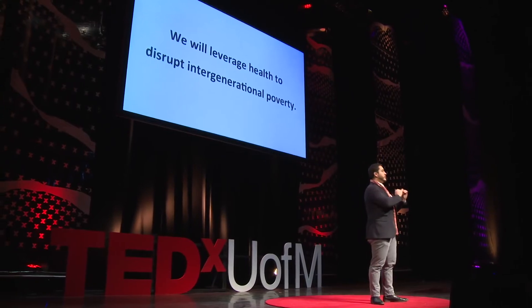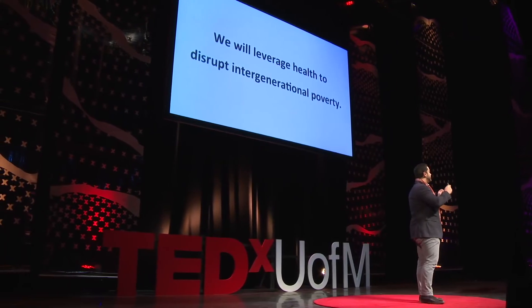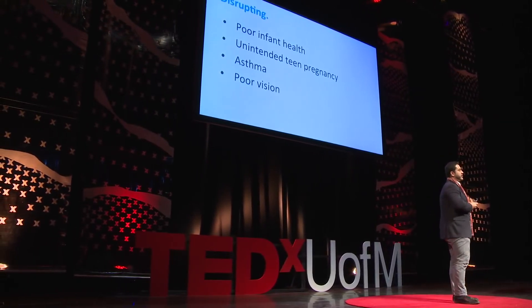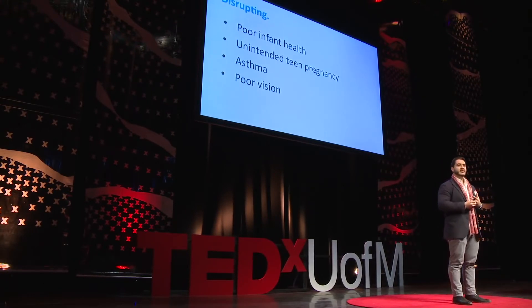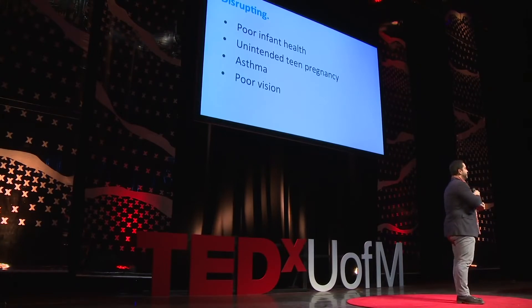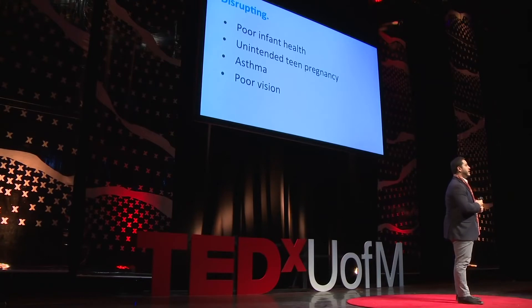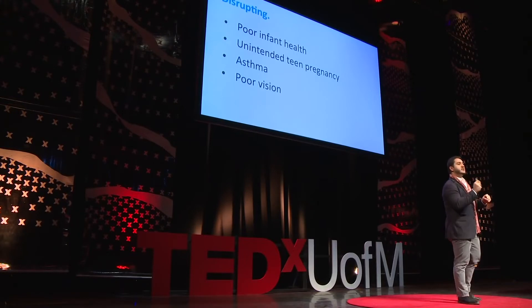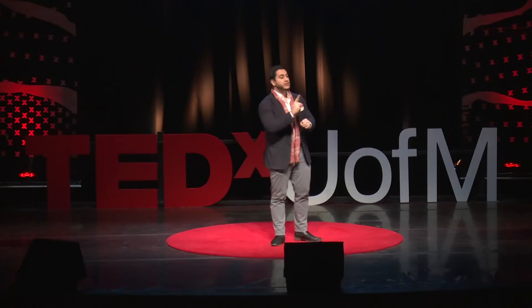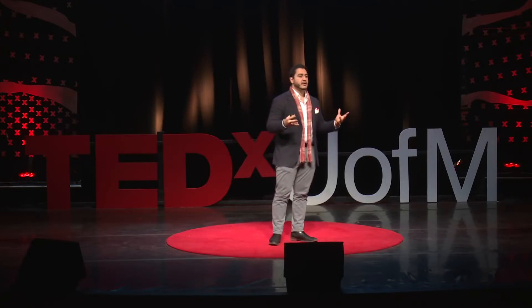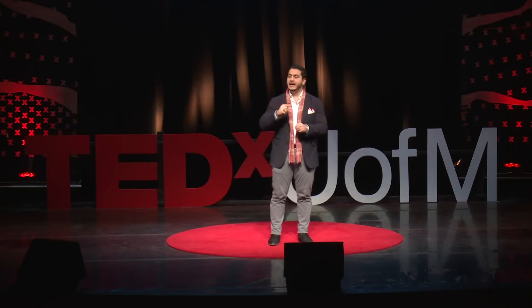At the Detroit Health Department, we leverage health to disrupt intergenerational poverty. Our goal is to think about barriers children face to being able to learn and earn like any child anywhere in America, and to systematically dismantle them. We're working on four outcomes: poor infant health — a preterm baby is likely to earn about $3,000 less at age 30; unintended teen pregnancy — a woman who becomes pregnant before graduating high school has a 50% likelihood of dropping out, and her child's risk of being preterm doubles; asthma, which is the leading health cause of school days missed; and poor vision — if you can't see the board, you can't learn.